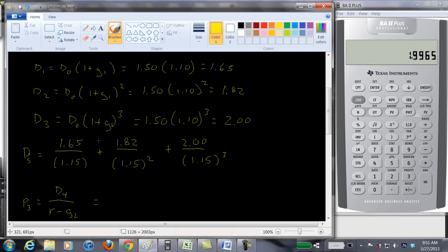So D4 is going to be D3, $2.00. But now it's not growing at a 10% rate, it's growing at a 5% rate. So times 1.05 and then divided by .15. We said 15% required return minus .05.